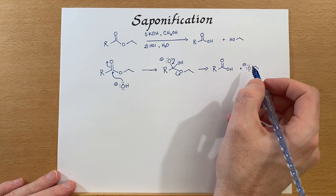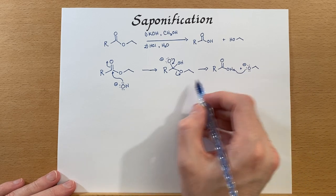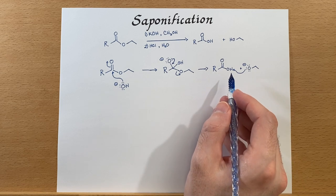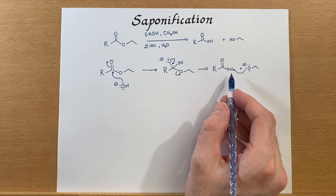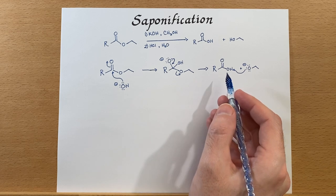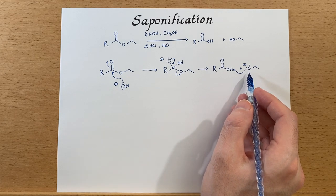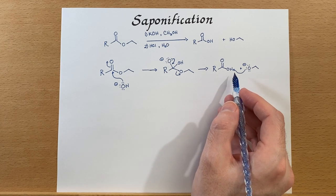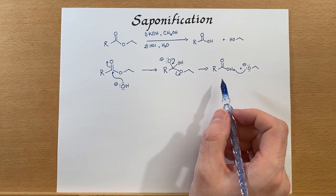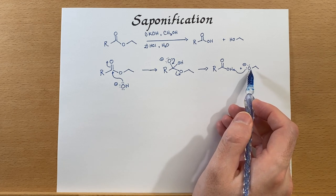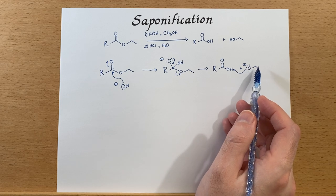You'll notice something interesting: we have now formed a carboxylic acid, but we have a very strong base generated as our leaving group. Immediately, this is going to deprotonate the carboxylic acid. This process will not be reversible, because a carboxylic acid is a fair bit more acidic than the corresponding alcohol. Transesterification was able to reverse because the attacking group and the leaving group were essentially the same.